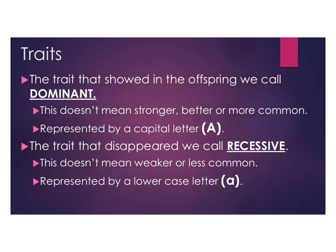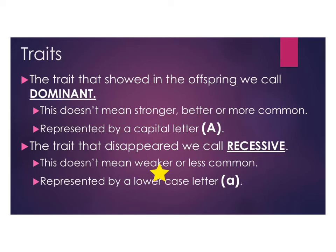What we now understand is that the trait that showed up in the offspring was dominant. This doesn't mean a stronger, better, or more common trait — it just means it's the one that shows. It's represented with a capital letter, often one that corresponds to the trait, like P for purple flower. The trait that disappears and reappears in the next generation is called the recessive trait, represented with the corresponding lowercase letter.